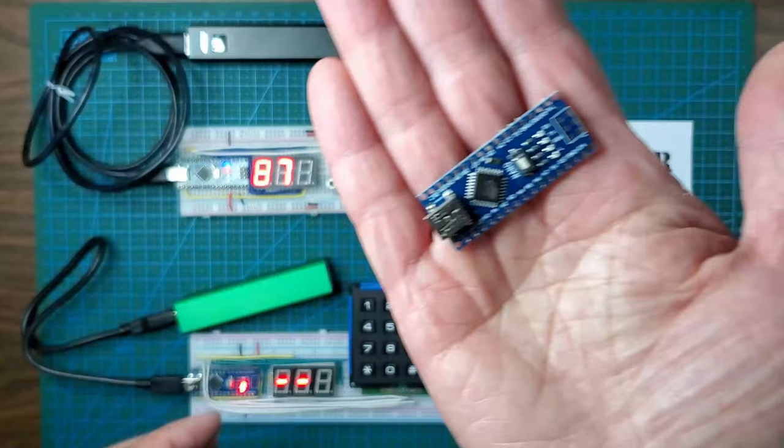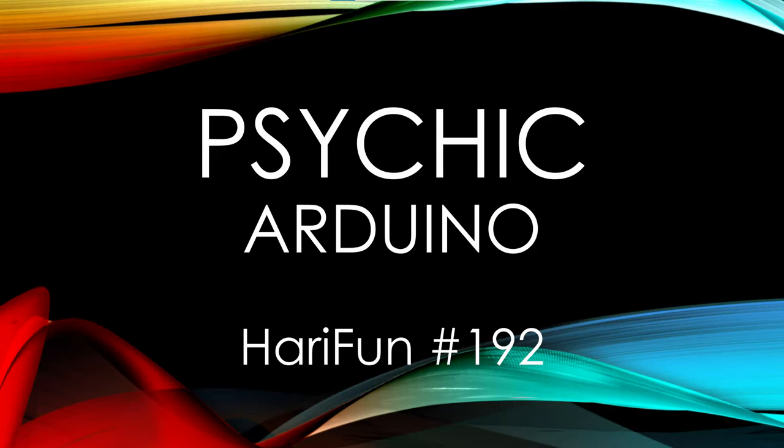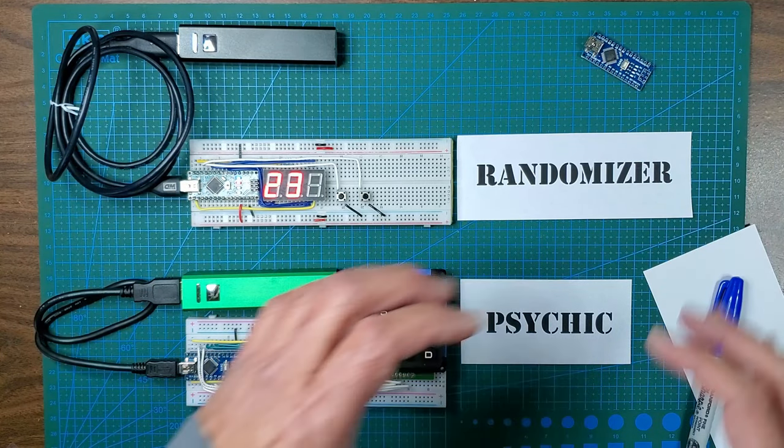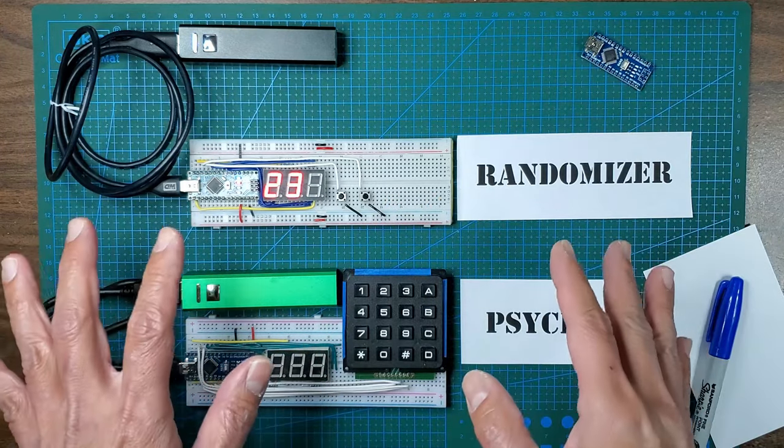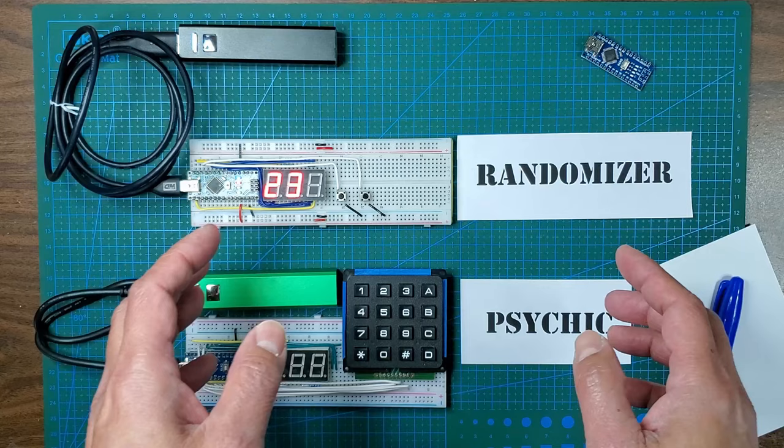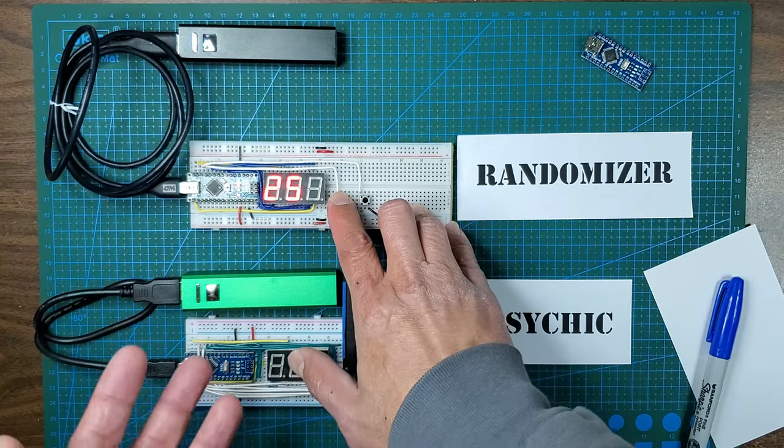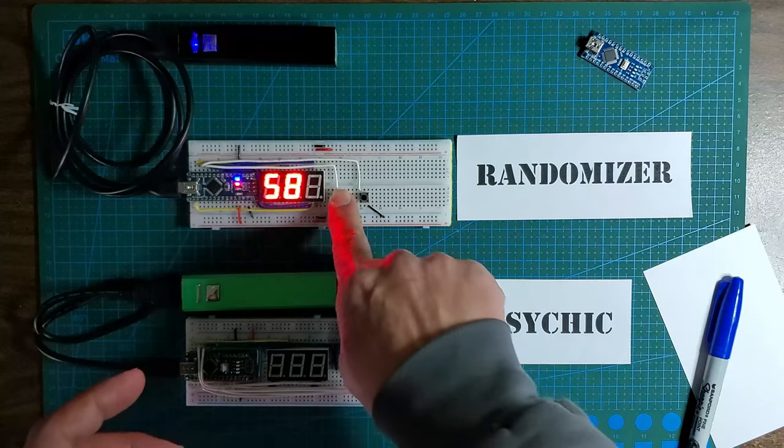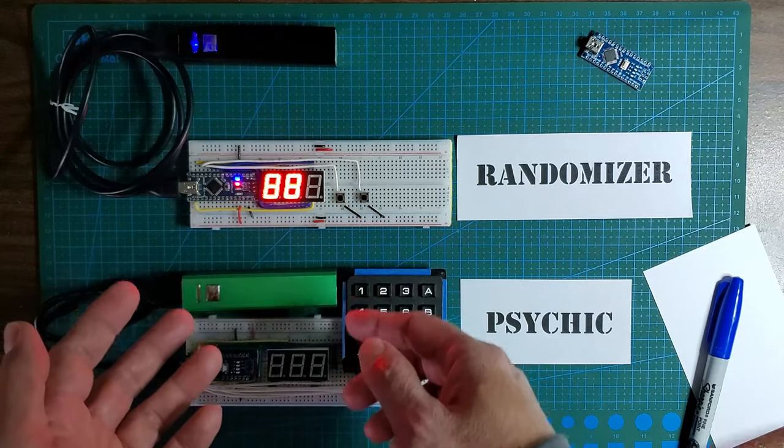Before we get to the psychic part, let me explain what's going to happen. Instead of a deck of cards, we're going to use a random number generator. Every time I press this button, it picks a random number.